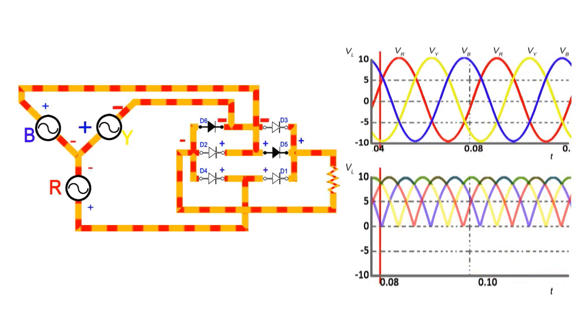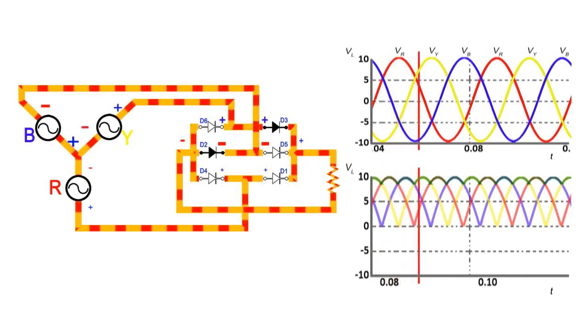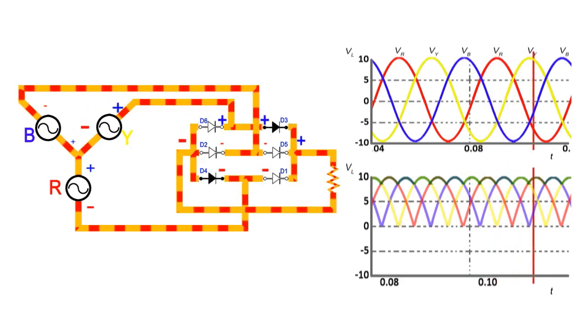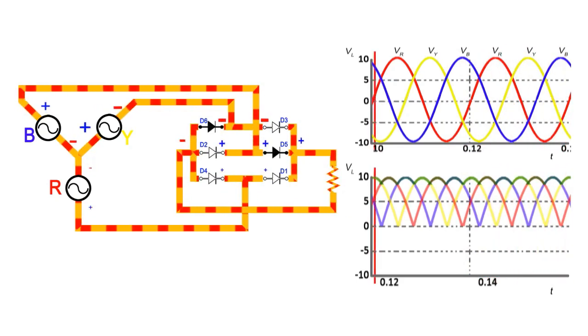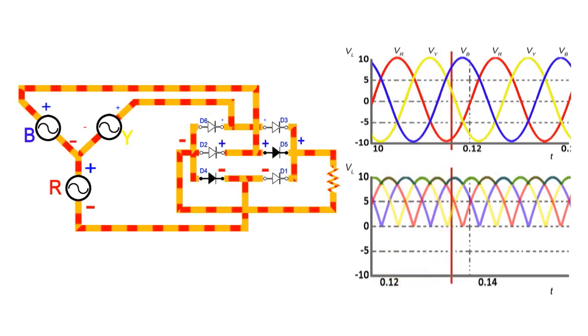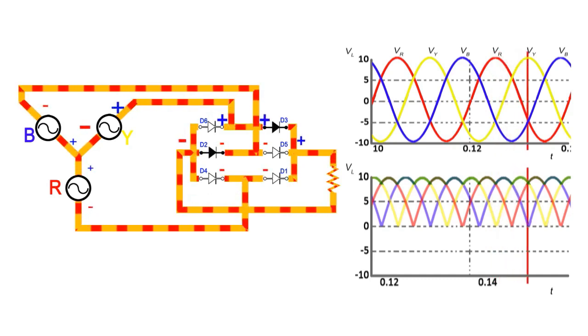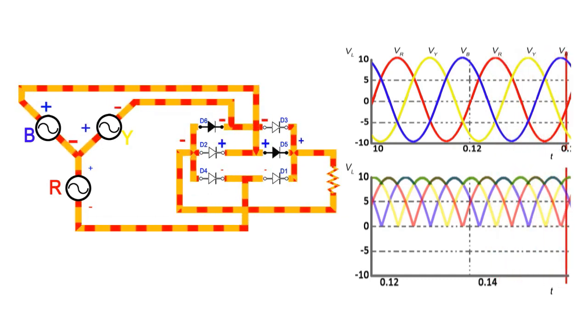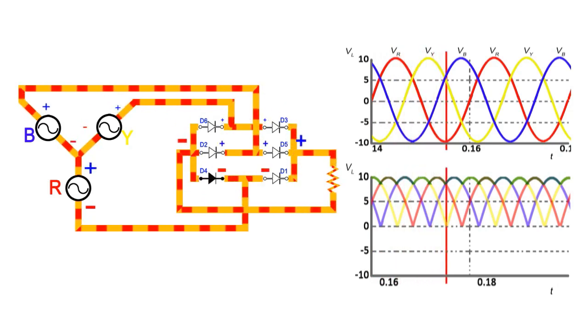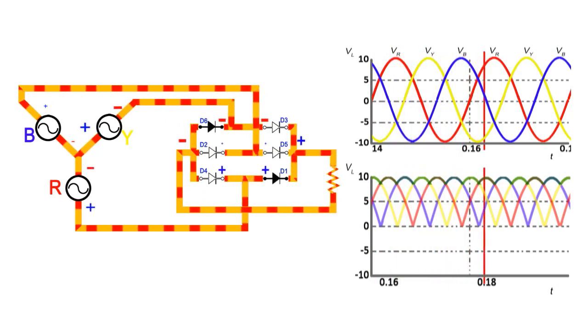Note that in this example, all the conditions are considered to be ideal. That means the losses in the source and in the load are neglected. Even the impedance of all the components from source to load is neglected. That's why the waveforms are also looking ideal. We did this to make it easy to understand. Hope you got it.